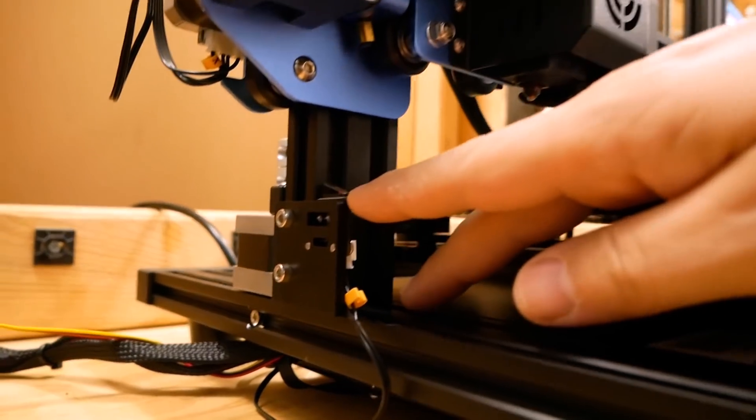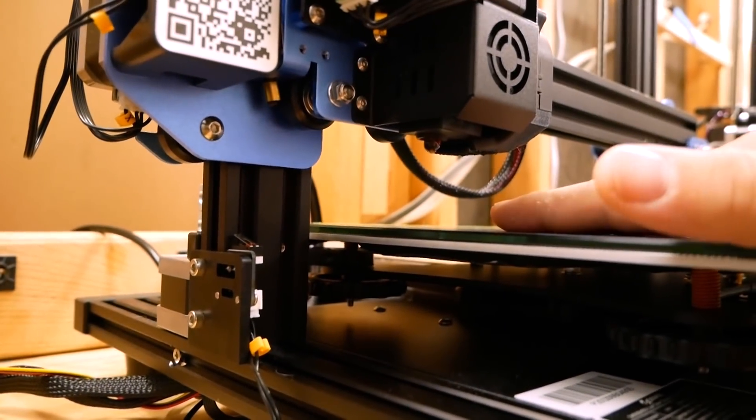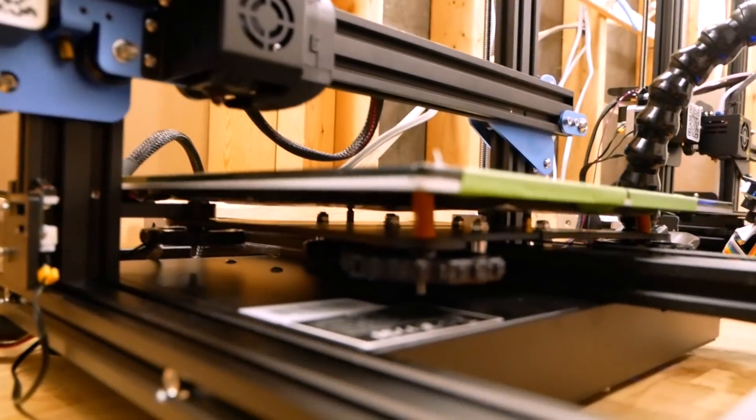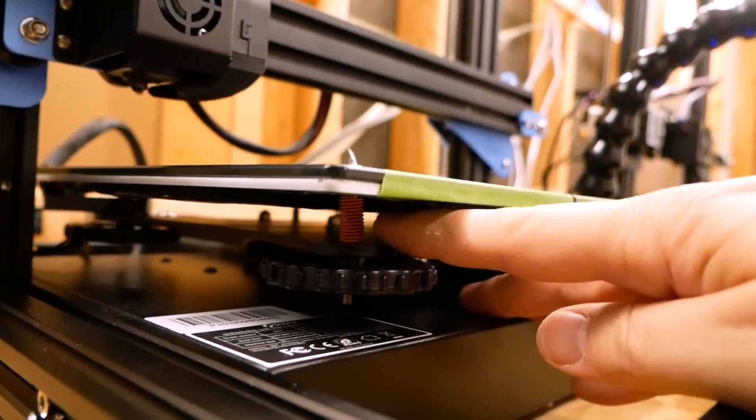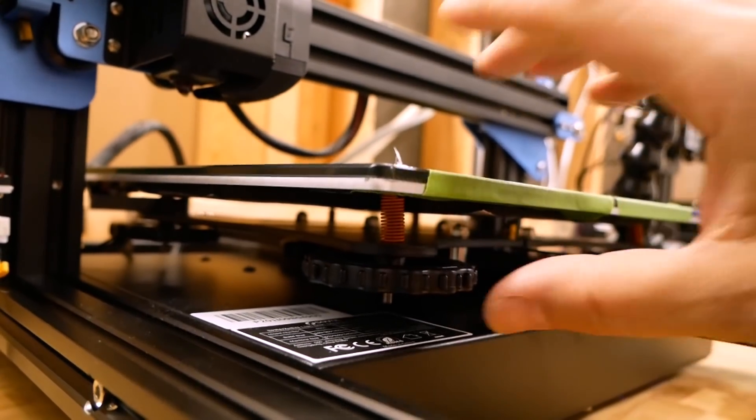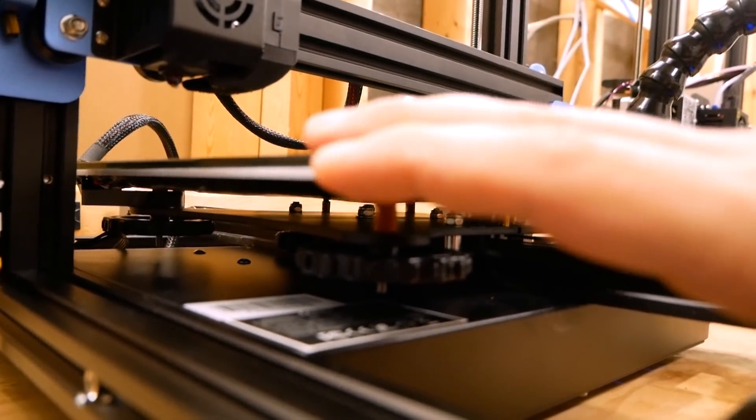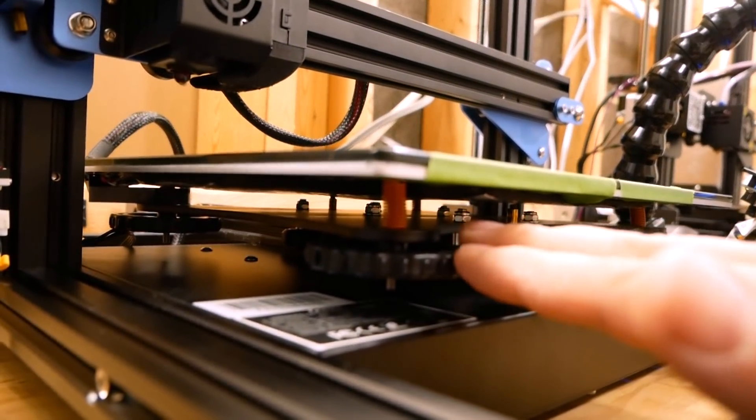You might think it doesn't really matter where you place that as long as you make sure that the nozzle doesn't crash. But the best performance is going to be had if these springs underneath the bed are as compressed and tight as they can possibly be, because that will prevent the bed from moving up and down as the print is happening.